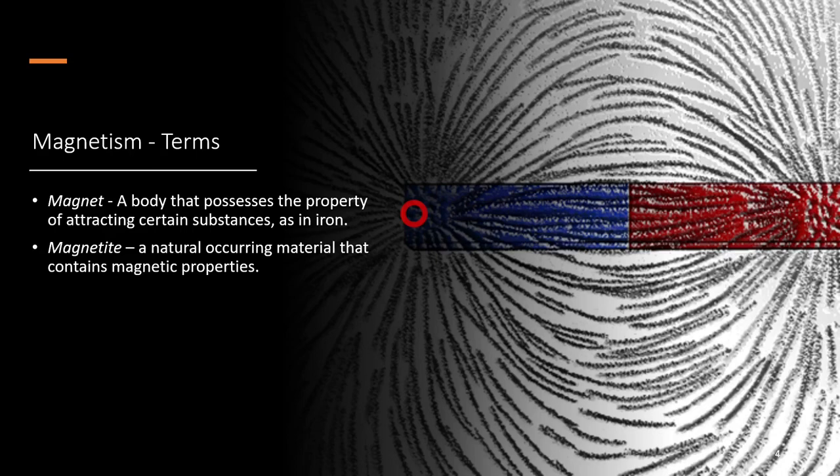Magnetite is a natural substance that contains magnetic properties. A lot of scientists don't even understand why magnetite is magnetic - we just know that it is. It's also interesting that magnetite is mined out of the earth, and the largest deposit is out in the ocean, about a mile deep, so it's not the easiest substance to obtain.